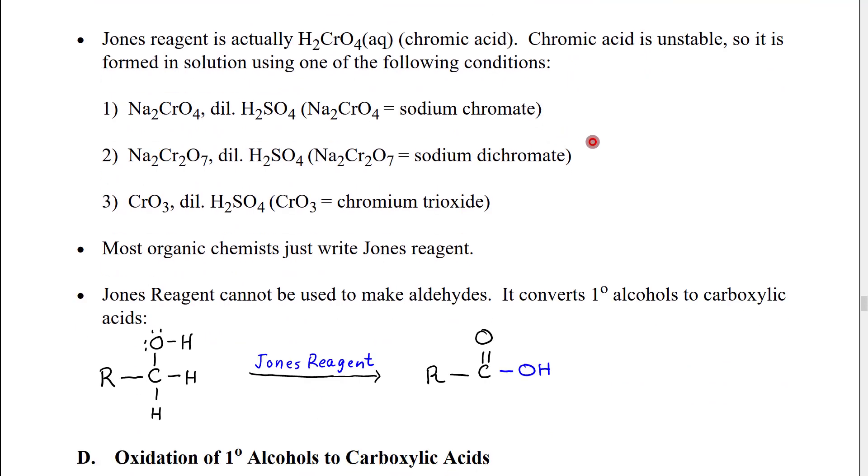Jones reagent itself is an actual chemical reagent. In fact the actual active reagent is this species here. This is called chromic acid. If you look at the structure this looks very similar to sulfuric acid but instead of having a sulfur here we have a chromium. It turns out there are a wide variety of inorganic acids that have a very similar structure to sulfuric acid.